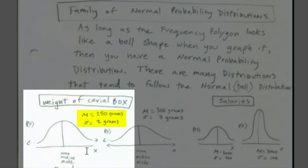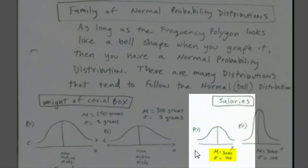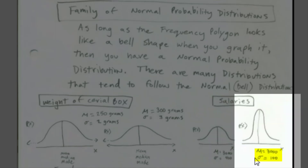For example, mu equals 250 grams with a standard deviation of 2, or mu equals 300 grams with a standard deviation of 3 grams. For salaries, a monthly salary of 3,000 with a standard deviation of 400, or 3,000 monthly salary with a standard deviation of 100.